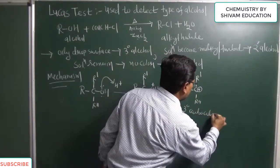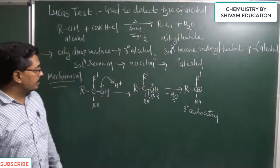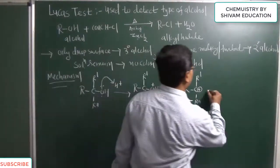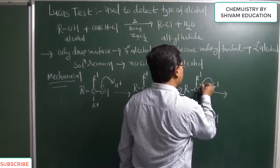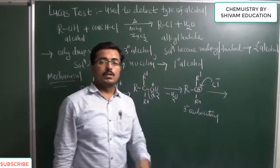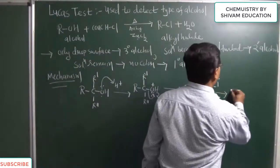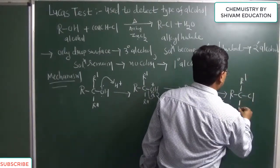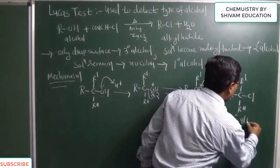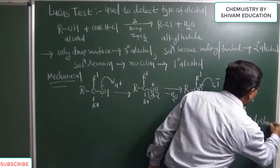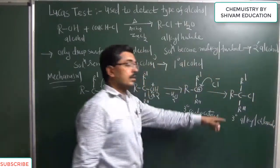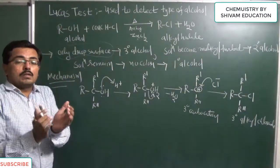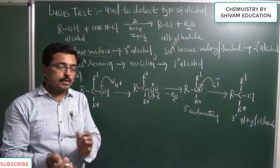Now whatever tertiary carbocation obtained to us, in our reaction medium chloride ion is present or available. So this chloride will attack immediately on this tertiary carbocation and we get an alkyl halide or we can get this tertiary alkyl chloride. So this tertiary alkyl chloride obtained to us.